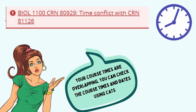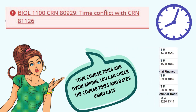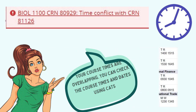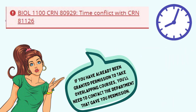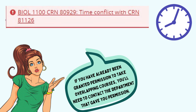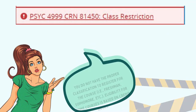This error means that your course times are overlapping. You can check the course times and dates using CATS. If you've already been granted permission to take overlapping courses, you'll need to contact the department that gave you permission; otherwise, select a different course.